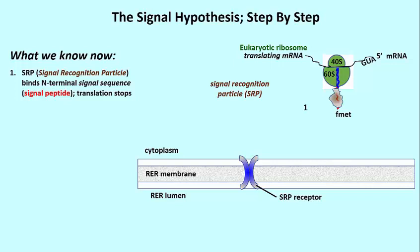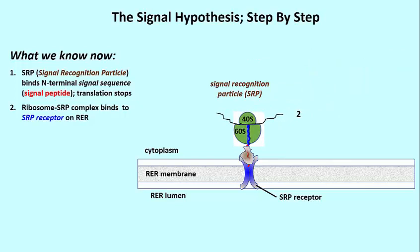So the signal recognition particle binds, translation is arrested temporarily, until the SRP encounters an SRP receptor on endoplasmic reticulum, on what will become rough endoplasmic reticulum. And that's illustrated in the second component of the picture.